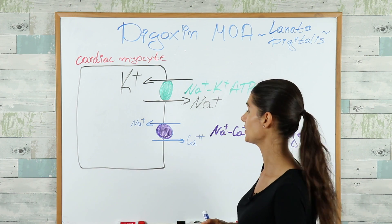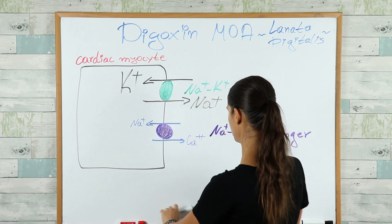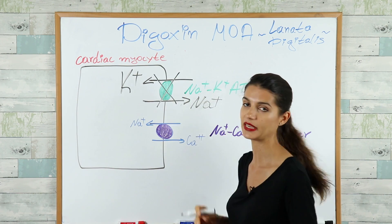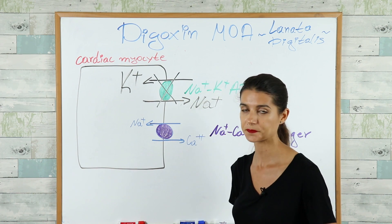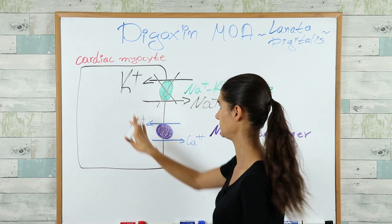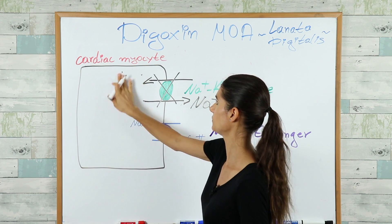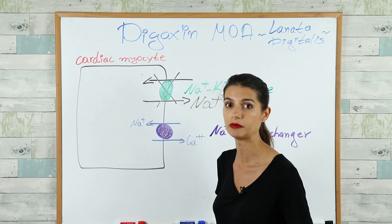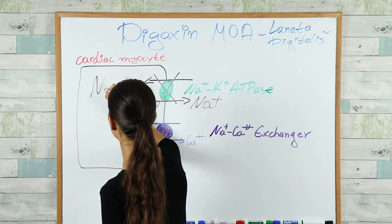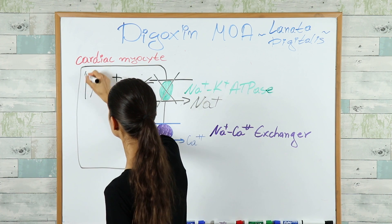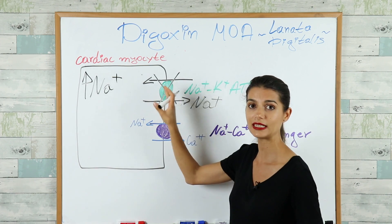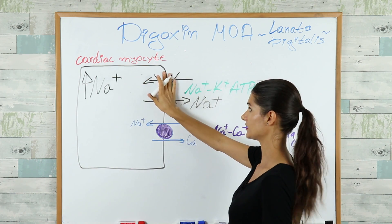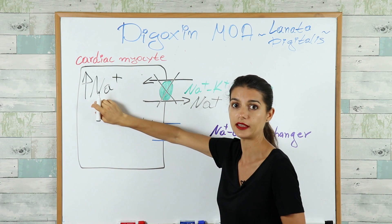So digoxin's mechanism of action is the following: digoxin comes and blocks the sodium-potassium ATPase. If you block this pump, the intracellular sodium ion concentration will increase, because normally this pump pumps out the sodium — if it doesn't work, the sodium will stay in.